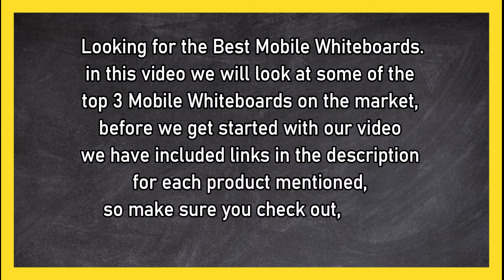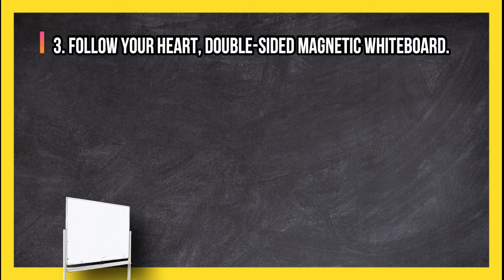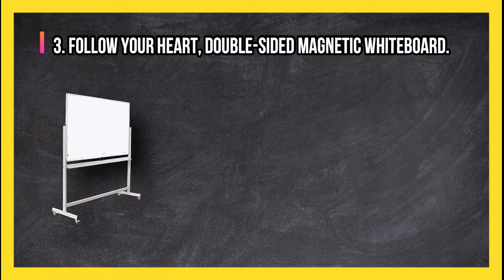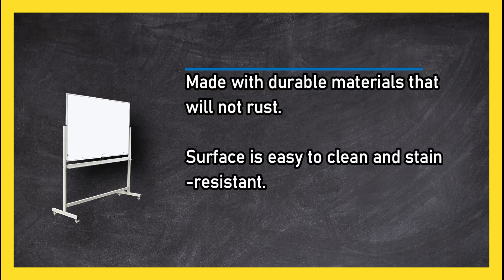So make sure you check those out to see which is in your budget range. At number 3: Follow Your Heart double-sided magnetic whiteboard, made with durable materials that will not rust. Surface is easy to clean and stain resistant.